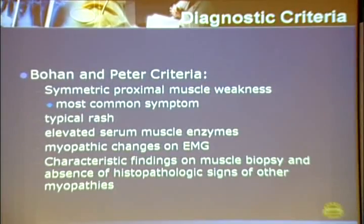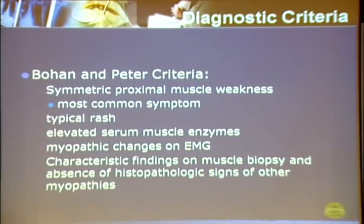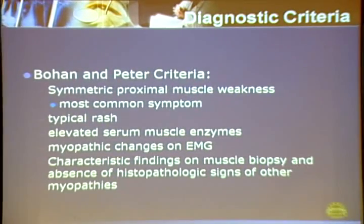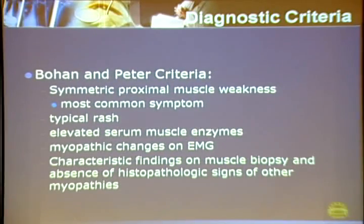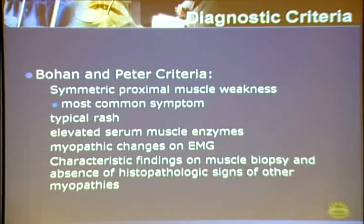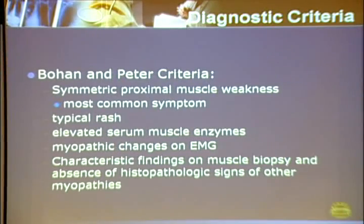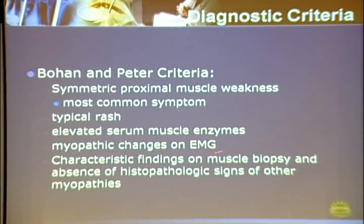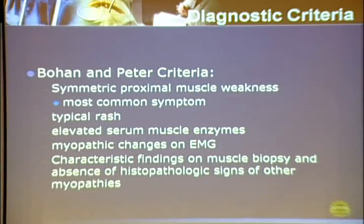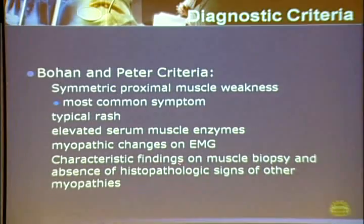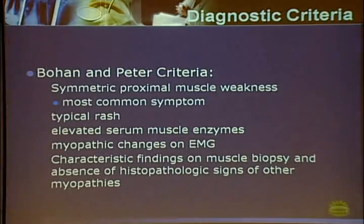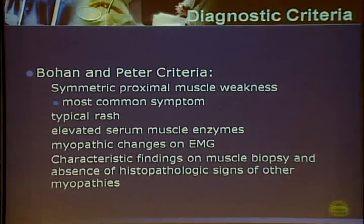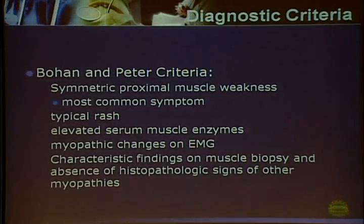The most commonly used classification criteria are proposed by Bohan and Peter, including symmetric proximal muscle weakness and typical rash. Patients also have elevated serum muscle enzymes, electromyography showing myopathic changes, characteristic findings on muscle biopsy, and absence of other causes of myopathy.